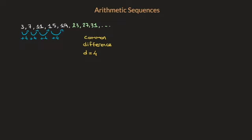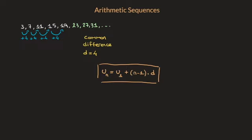Here's the formula: the nth term is equal to the first term, u sub 1, plus, in parentheses, n minus 1, times the common difference D. Do make a note of it — this is the formula for the nth term.